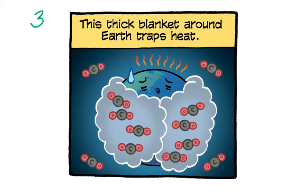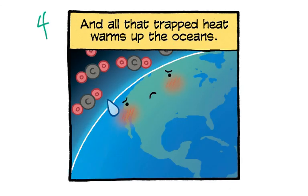You would then convey that this blanket gets thicker as more CO2 is produced, and that thick blanket traps heat around the Earth, making it warmer — and that's a problem. All that trapped heat warms up the ocean. This particular example focuses on the impact on the oceans; you could talk about coral bleaching, or problems not related to oceans like human health or other species being affected on land.